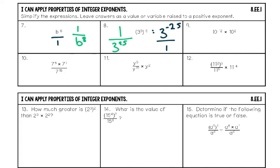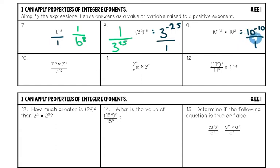Number nine: I'll use the product rule — same base 10 being multiplied, so add the exponents. Negative twelve plus two gives 10 to the negative tenth power. In the apartment, 10 starts on the top floor but is not happy with that negative exponent, so it has to move. 10 to the tenth power goes on the bottom with a positive exponent, and there's a one on top. Final answer: one over 10 to the tenth power.